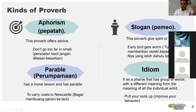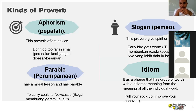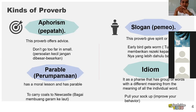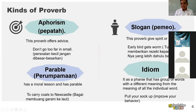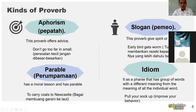The next kind is an idiom — a phrase made of a group of words whose combined meaning is different from the meaning of each individual word. The meaning changes when the words are joined together. For example, 'pull your socks up' means 'improve your behavior.' So proverbs can come in the form of aphorism, parable, slogan, or idiom.